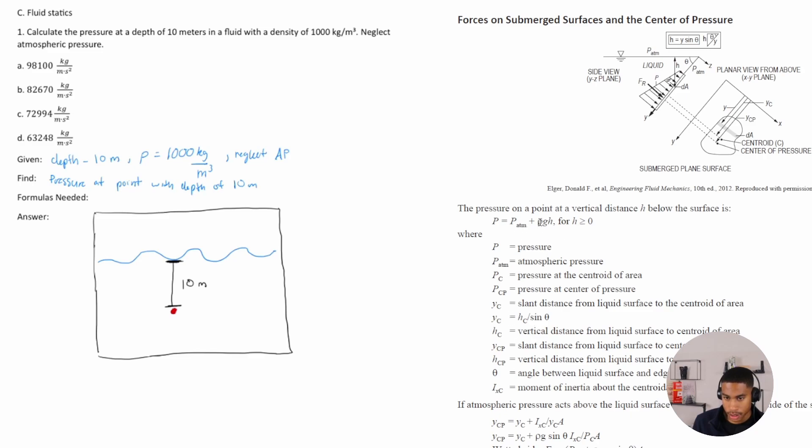The rho is a density, that's the symbol for density. G is gravity, and then H is the distance, that vertical distance.